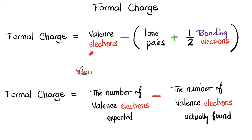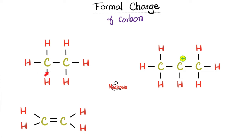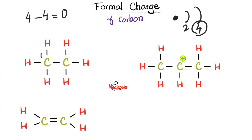On formal charge: use the simple version — what you expected minus what you actually found. Carbon expects four valence electrons (four bonds). If carbon has four bonds: 4 minus 4 equals zero — neutral. If carbon has only three bonds: 4 minus 3 equals +1 — that's a carbocation with a formal charge of +1. Let's look at this carbon: expects four, finds one, two, three, four — four minus four equals zero, neutral.